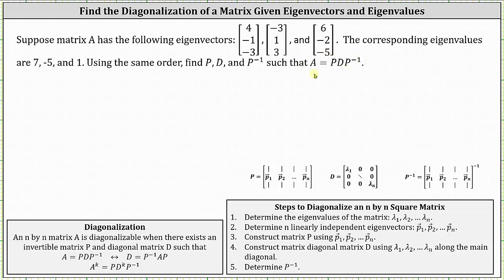Most of the work has already been done for us. If we take a look at the steps to diagonalize an N by N square matrix: number one, we determine the eigenvalues of the matrix, which are lambda sub one through lambda sub three in our case. And then we determine N linearly independent eigenvectors, which again has already been done for us. Those are the three given eigenvectors. And then we construct matrix P using the eigenvectors, and then construct the diagonal matrix D using the eigenvalues along the main diagonal. And then the final step, which we still have to do, is to determine P inverse.